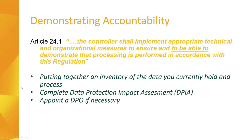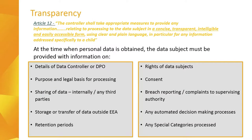If you propose to carry out new processing and that processing is going to result in high risk to an individual, you will be required to conduct a DPIA. High-risk processing includes processing on a large scale or systematic basis and special categories or sensitive data. You may also need to appoint a Data Protection Officer — this is a new role under GDPR and the main role of the DPO is to monitor internal compliance with the regulations.